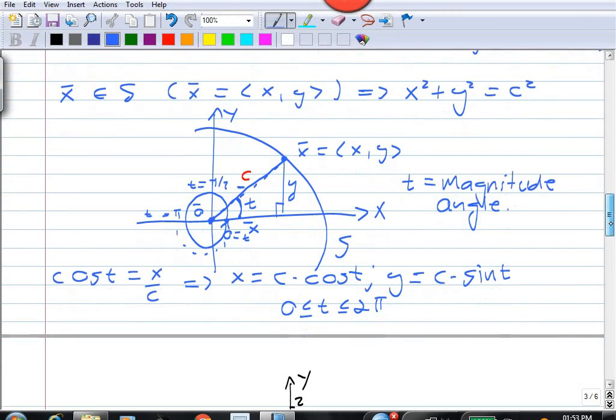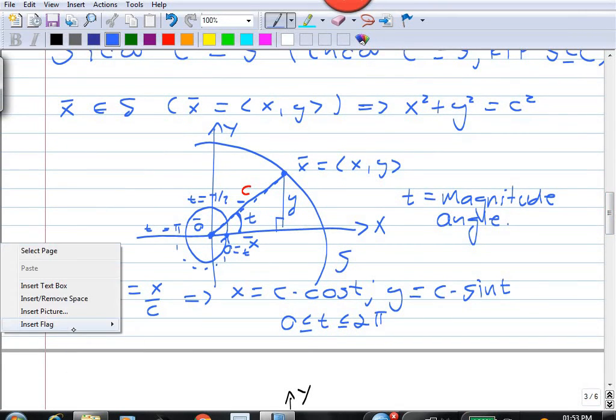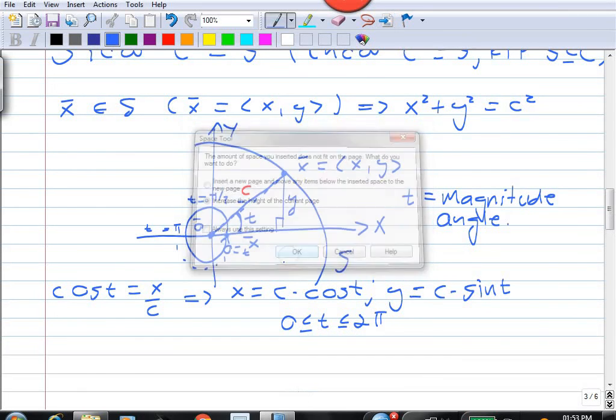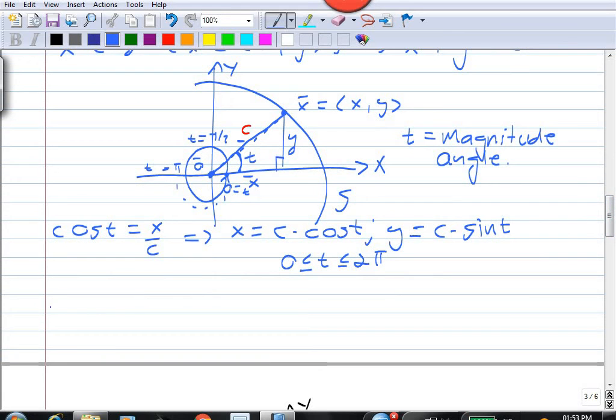So, what does this show? Well, this shows that if we have a point x on the circle, then x is of the form (c cos t, c sin t), in other words, r(t).